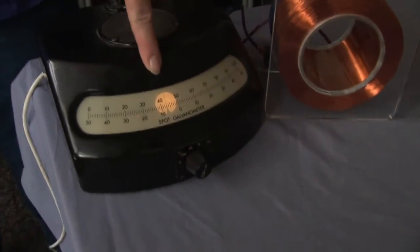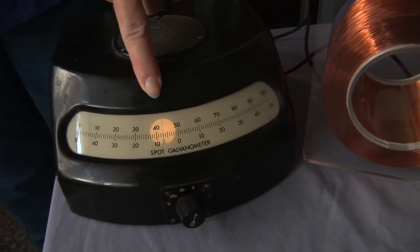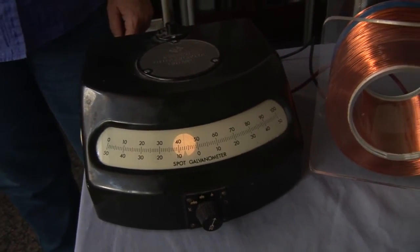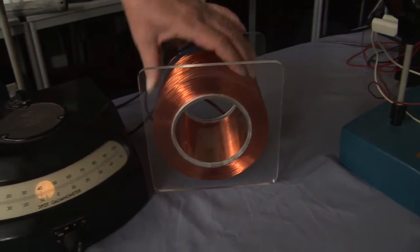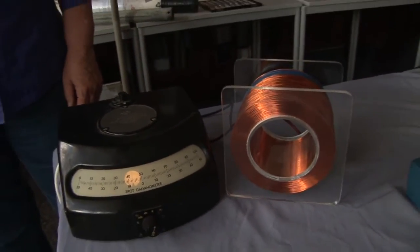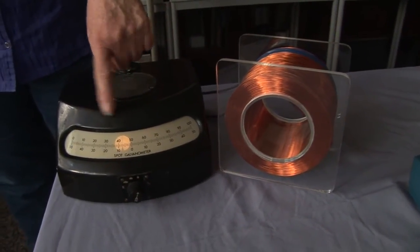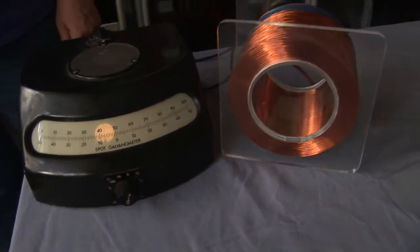What it has is a bright spot on it. The bright spot indicates at this moment that there's no current flowing through the coil, the copper coil that it's connected to. If there was a current flowing through there, then the bright spot would indicate how much current was flowing through.